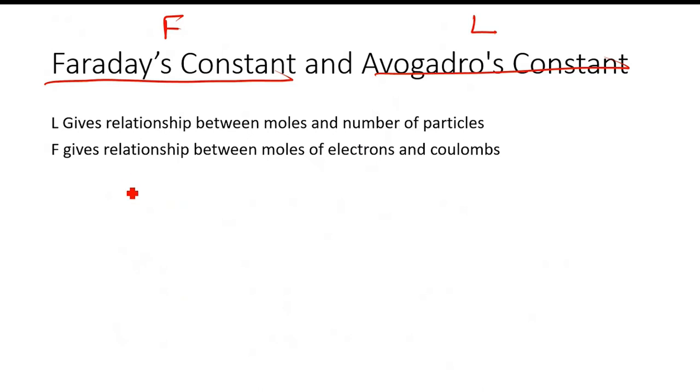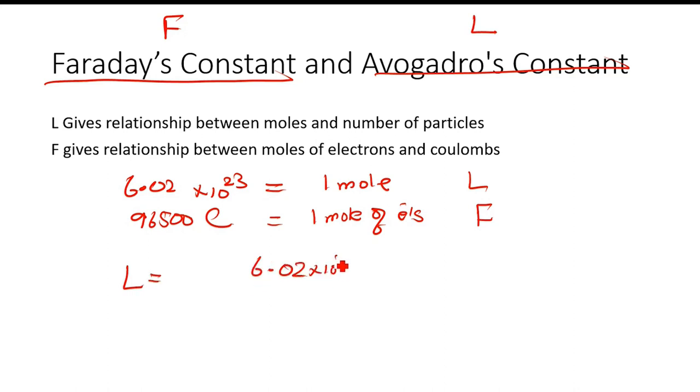6.02 × 10^23 equals 1 mole. 1 mole of electrons is 96,500 coulombs. L equals 6.02 × 10^23 particles per 1 mole. F equals 96,500 coulombs per mole of electrons.